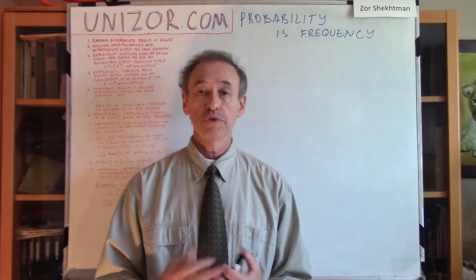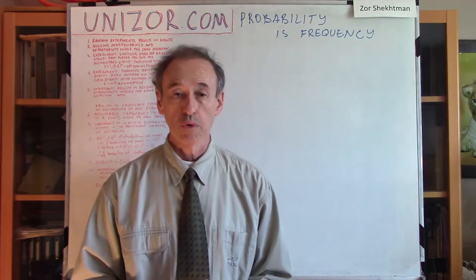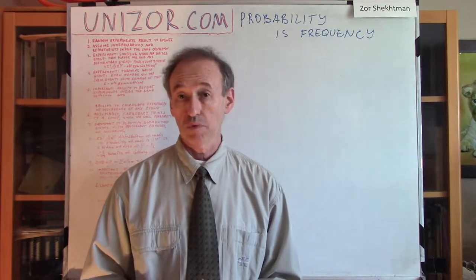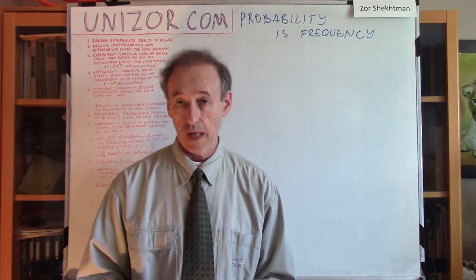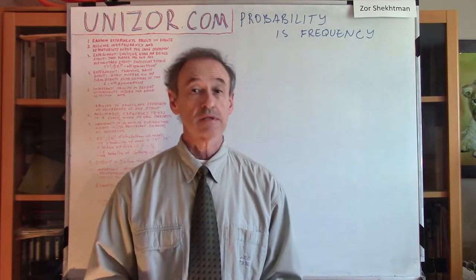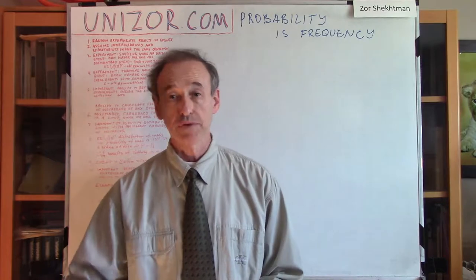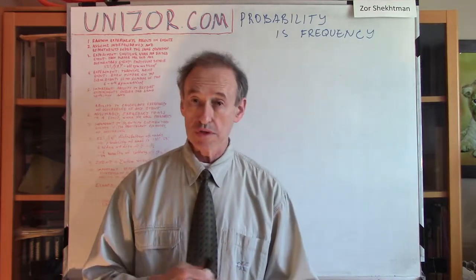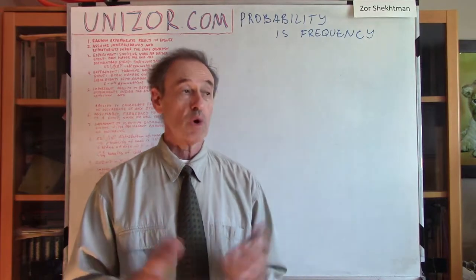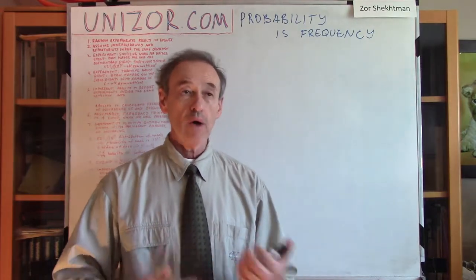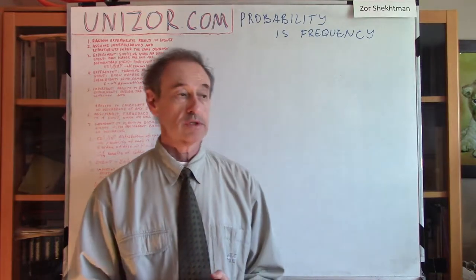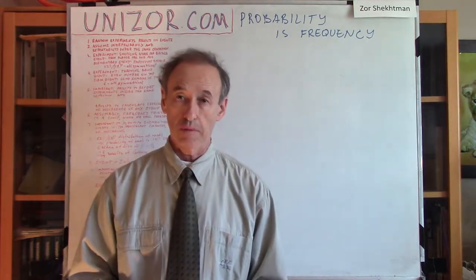Intuitively, you feel that if you flip the coin ten times, it's not really necessary that you will get five tails and five heads. If you flip it one thousand times, it's not necessary it will be five hundred and five hundred. It will be close to those numbers, but not exactly. So how can I approach probability from a frequency of occurrence standpoint? That's basically what this lecture is all about.